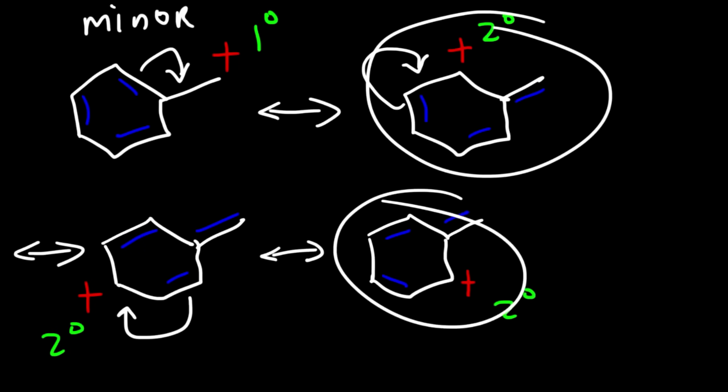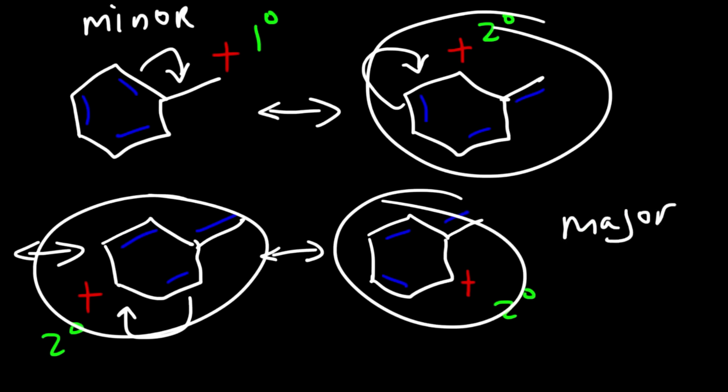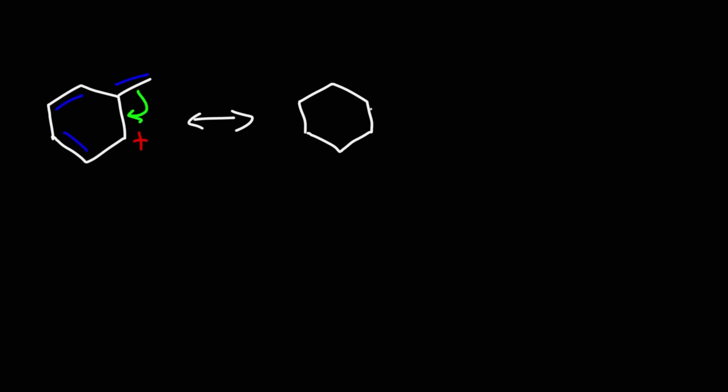The primary carbocation is going to be the minor resonance contributor because it's the least stable. The secondary ones are equally stable, so they form part of the major resonance contributor. Going back to that last problem, there's one more resonance structure we can draw among the common ones — there are many uncommon ones too. We can take this double bond, move it to the positive charge, and we get this structure. It's similar to the original but notice that the double bonds in the benzene ring have been shifted.